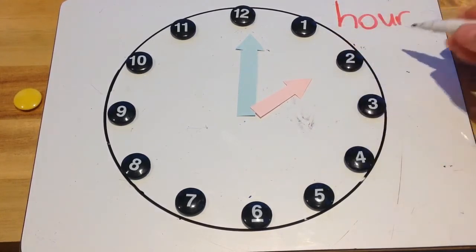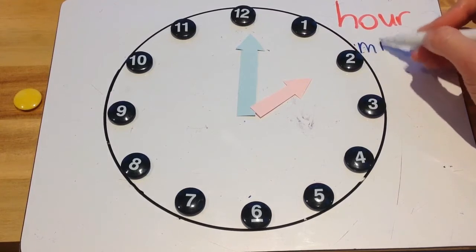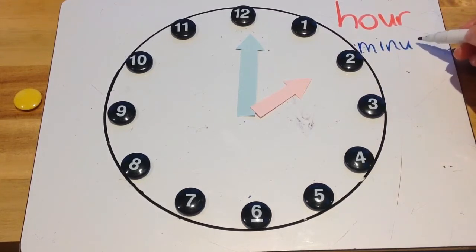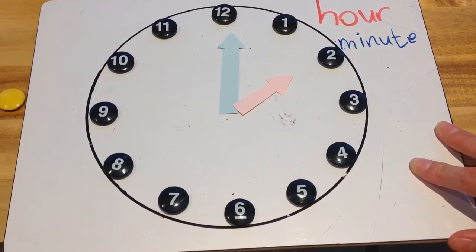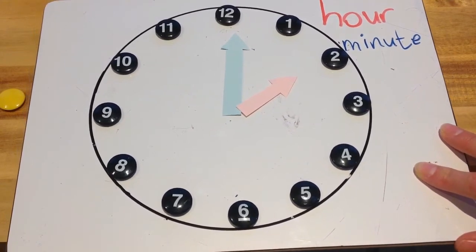And the long hand is the minute hand. So I'm going to write that here in blue, minute. The blue hand is the minute hand. You see that? And the red or the pink hand is the hour hand.